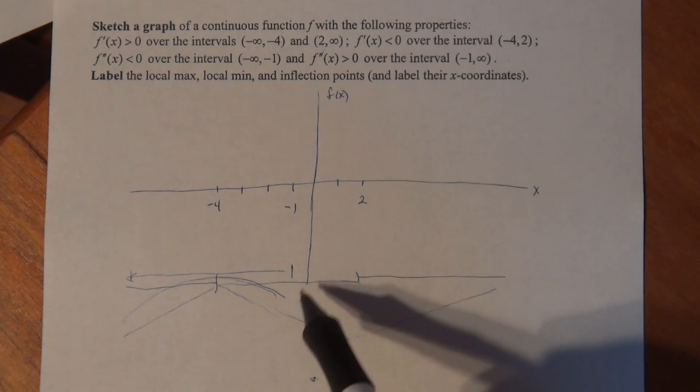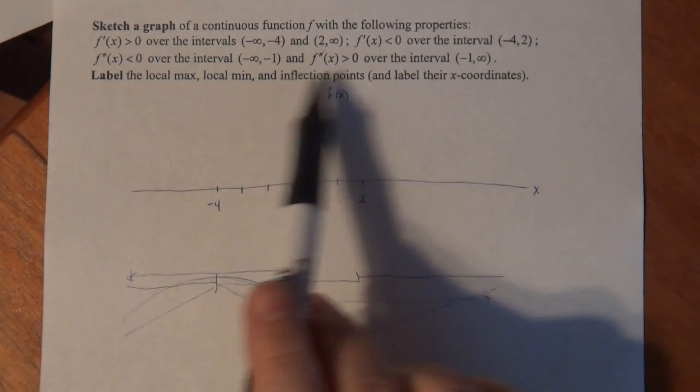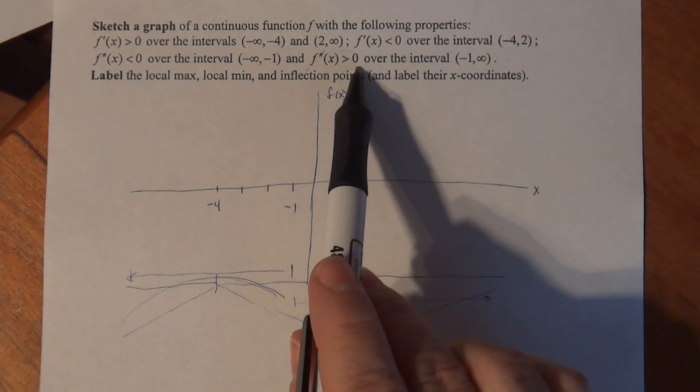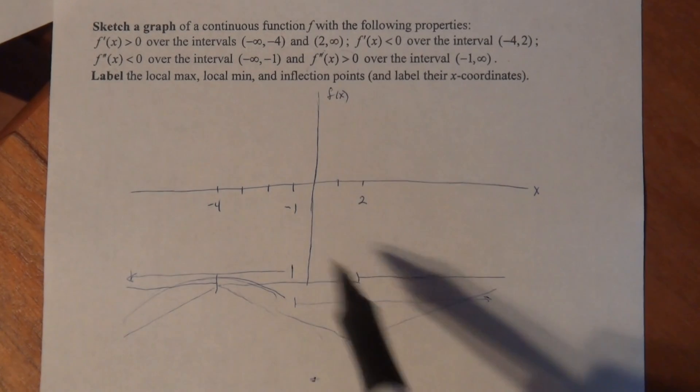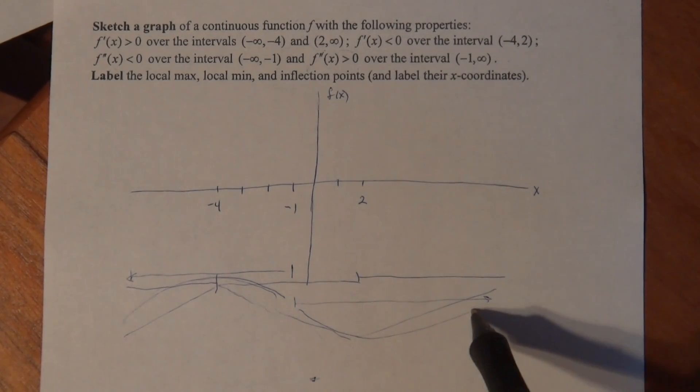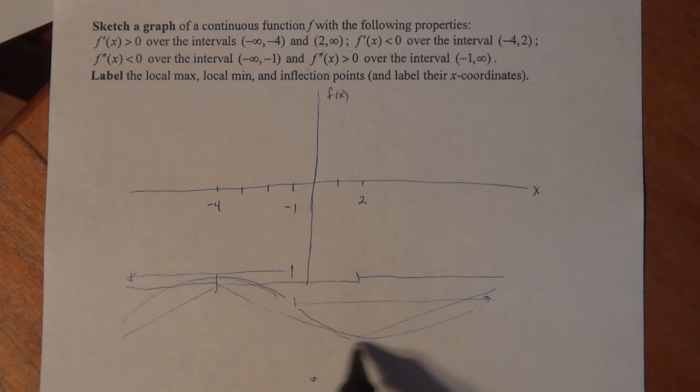Now from minus 1 to infinity, I have f double prime being greater than 0. Look at the right spot, Patty. f double prime being greater than 0. So that means that f itself is concave up. So you can kind of see how everything is fitting together. So I've got a concave down piece, concave up piece.